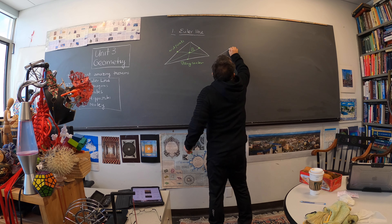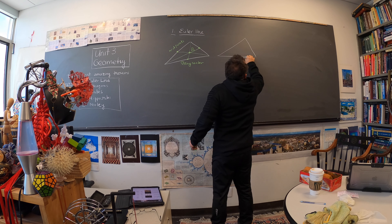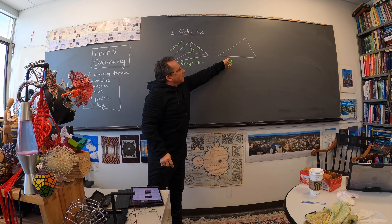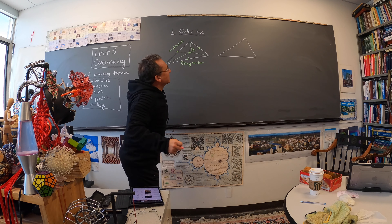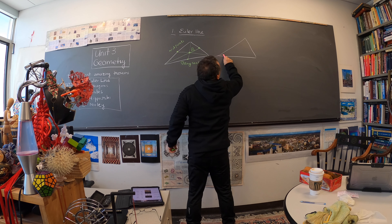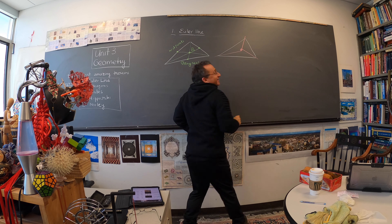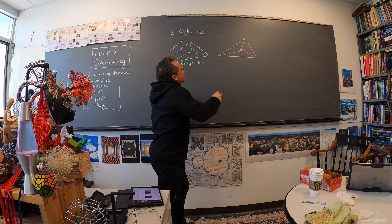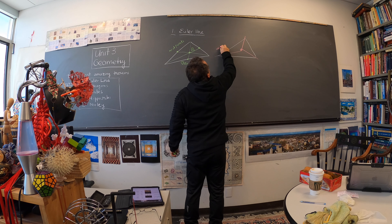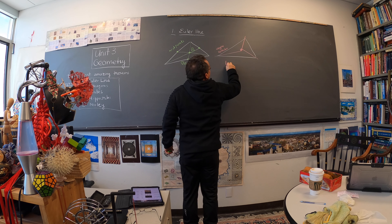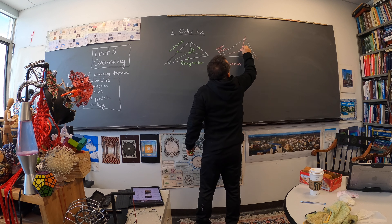We can also look at other points. We can describe the inscribed circle. When we want to have the inscribed circle, we take the angle bisectors. It's also a miracle — it doesn't look like they meet, but they actually do. This is called the incenter. Let's call it I.